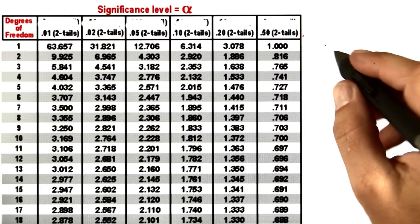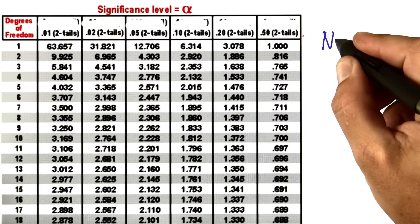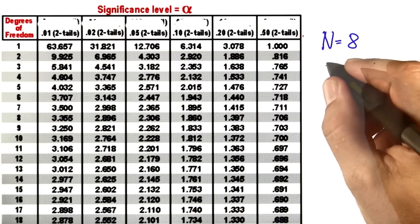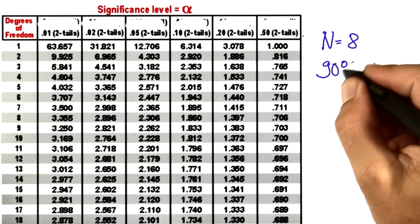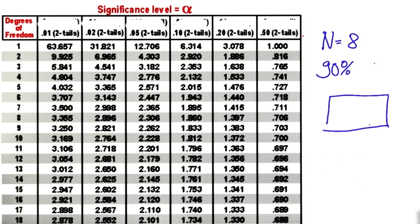Okay? Just to make sure you know how to read out this table, suppose we have n equals 8 samples, and we look for a 90% confidence interval. What number would you find in this table to be the magic number?